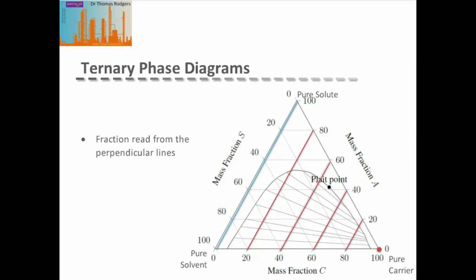Any point on this line only contains solvent and solute. The mass fraction is then given by the grid lines parallel to this zero percent axis. So, for example, we can see that the plait point lies somewhere between 40 and 60 percent of our pure carrier, and it's slightly closer to the 40 than the 60, so the plait point is about 47 percent carrier.